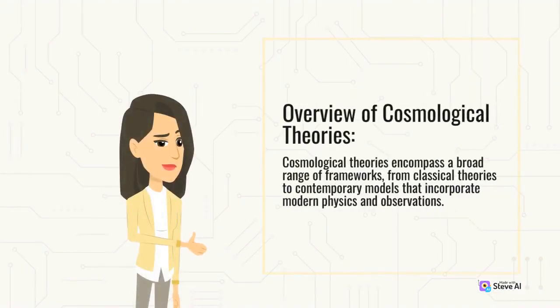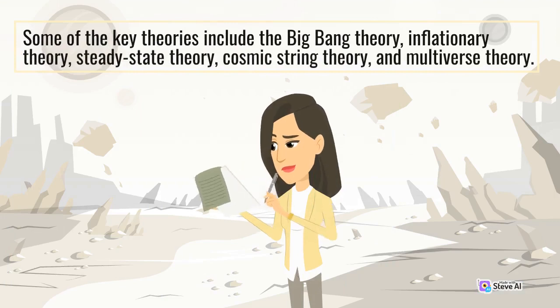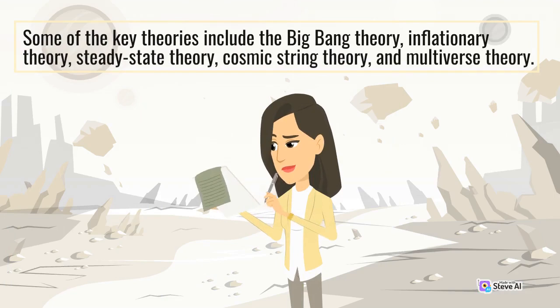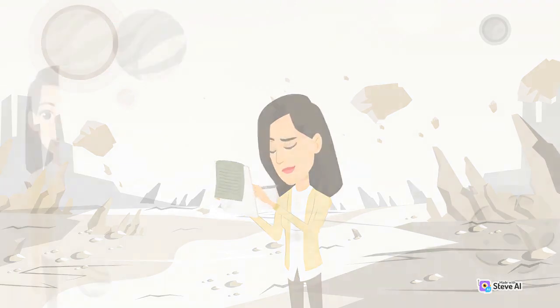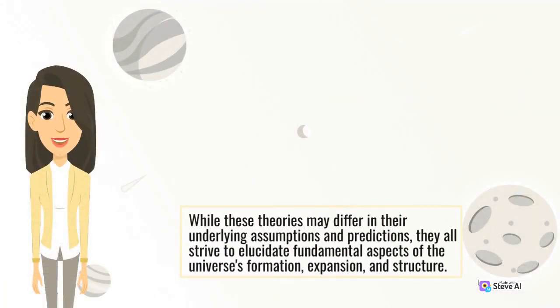Cosmological theories encompass a broad range of frameworks, from classical theories to contemporary models that incorporate modern physics and observations. Some of the key theories include the Big Bang Theory, Inflationary Theory, Steady-State Theory, Cosmic String Theory, and Multiverse Theory. While these theories may differ in their underlying assumptions and predictions, they all strive to elucidate fundamental aspects of the universe's formation, expansion, and structure.